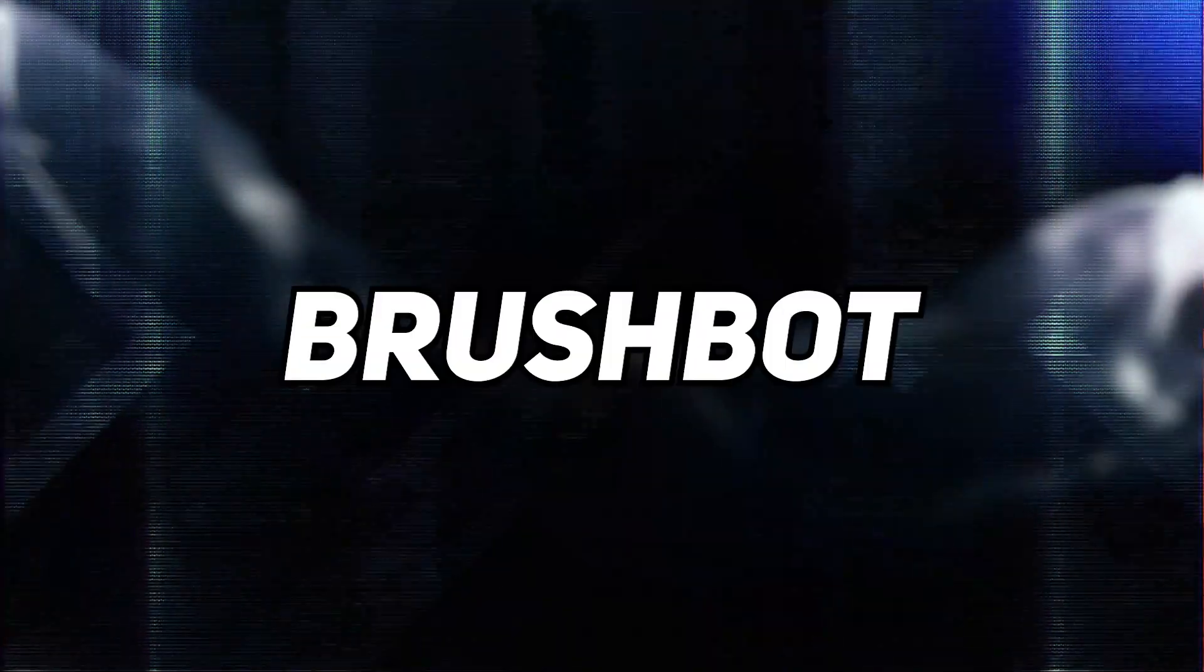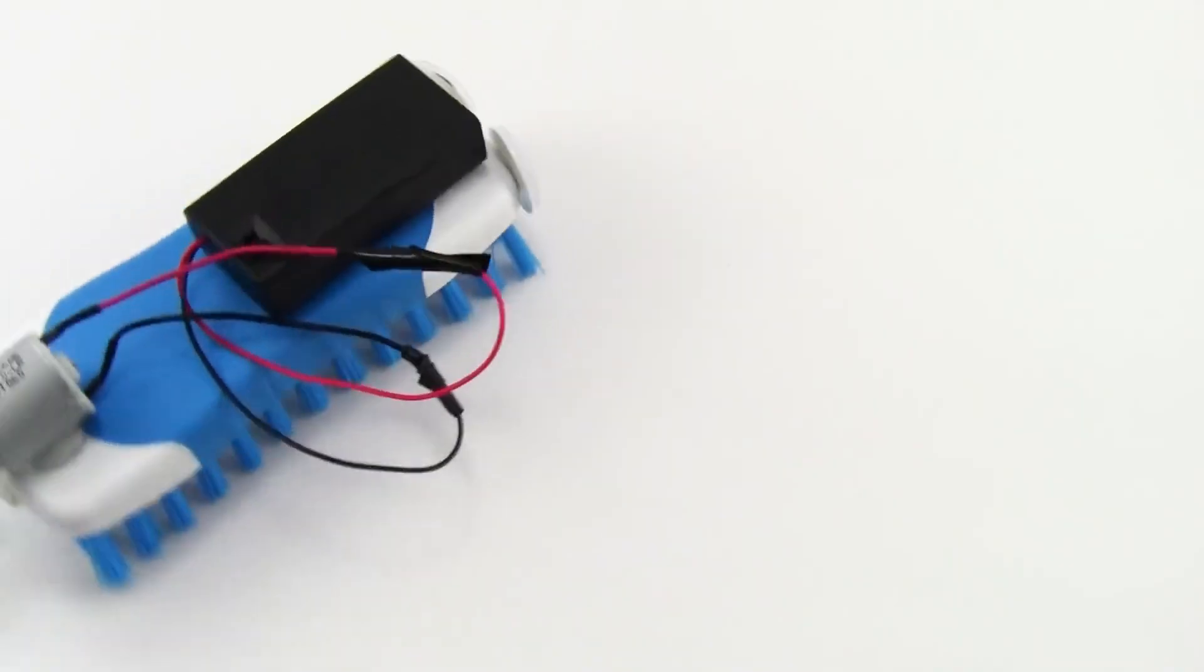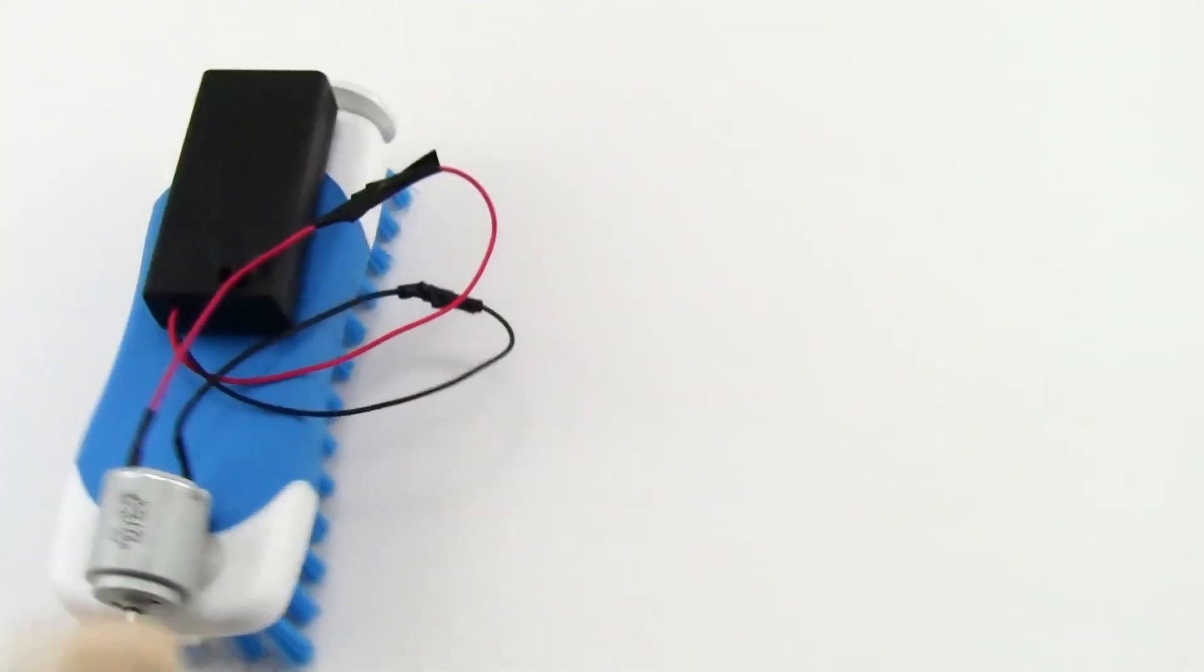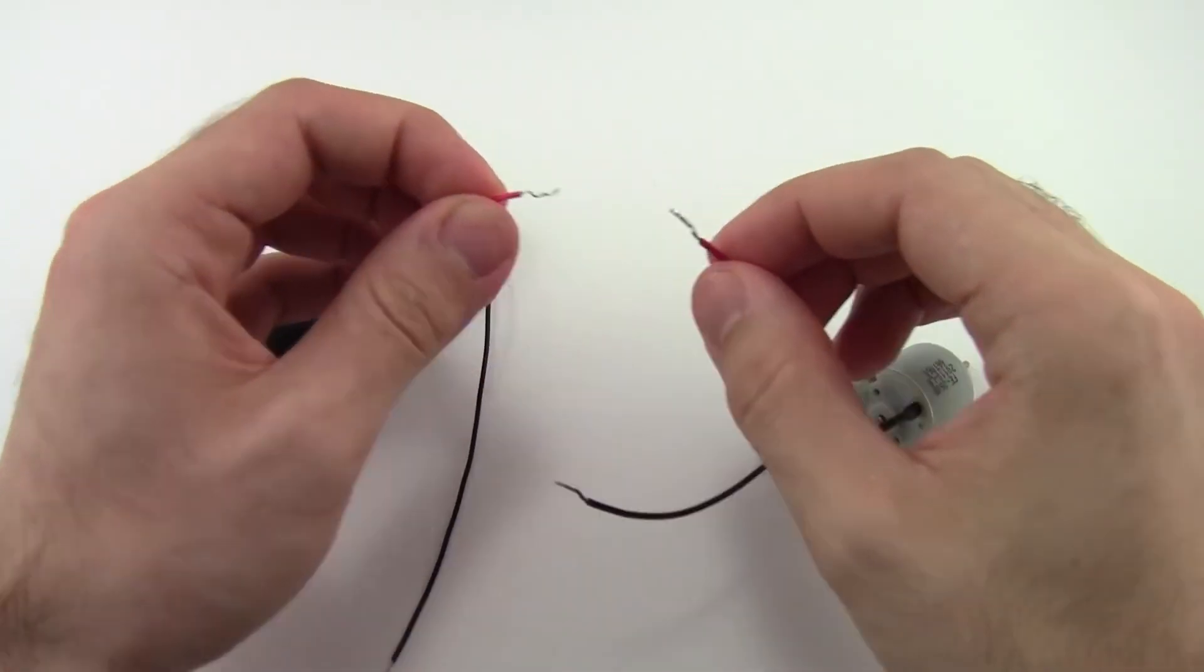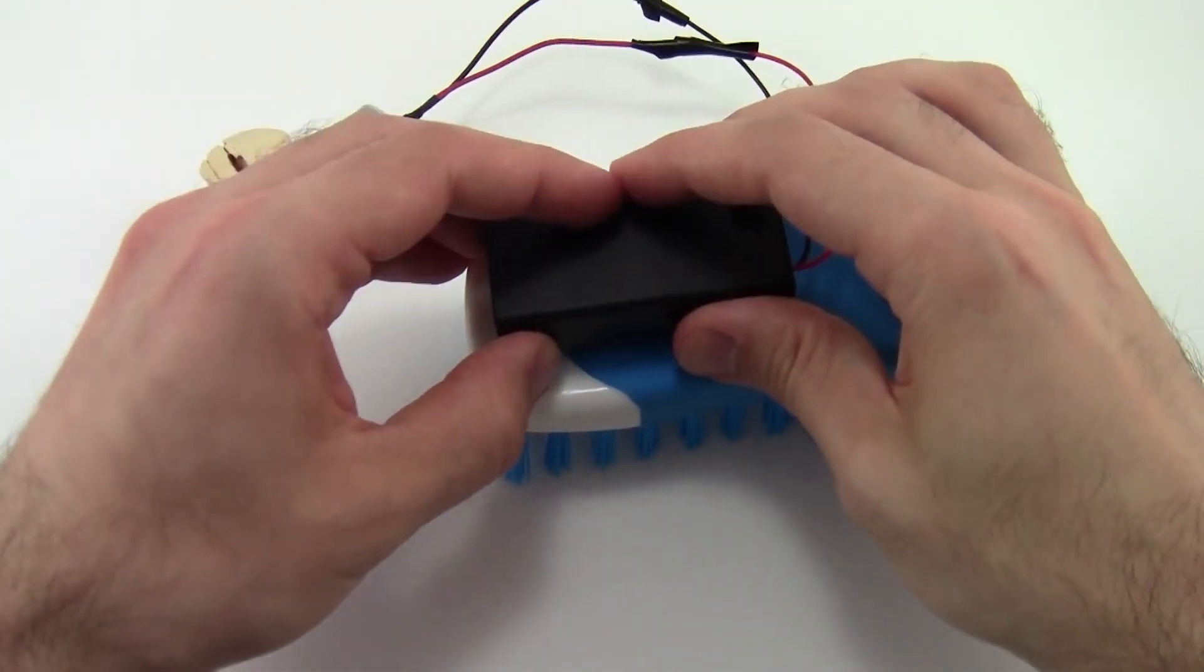Number one: BrushBot. The first project is a BrushBot which is a simple robot made from a toothbrush head, a coin battery and a vibrating motor.